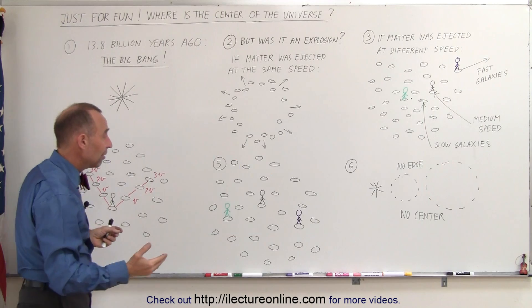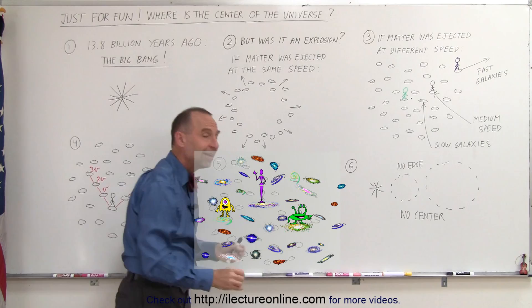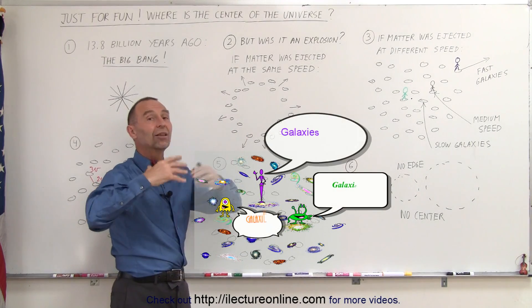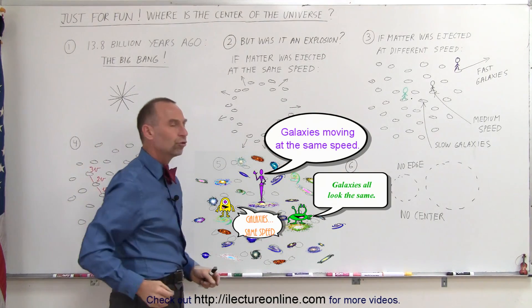It doesn't matter if you're on this galaxy, or an alien on this galaxy, or another alien on this galaxy. Every alien on any galaxy that they live, look around them, and they see all the galaxies moving away from them at the same speed, no matter where in the universe you are.